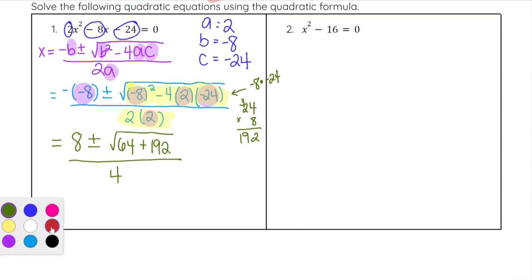All over 2 times 2 is 4. Now simplify the part underneath the square root, 64 plus 192. You end up with 8 plus or minus the square root of 256 over 4.